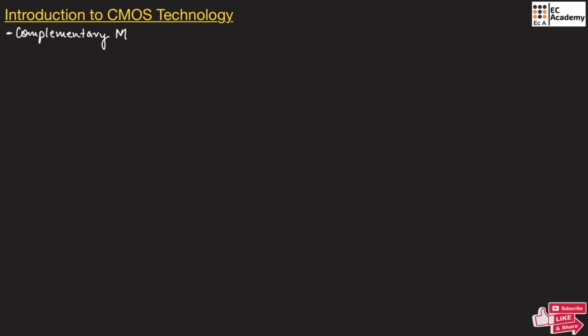CMOS refers to complementary metal oxide semiconductor. It is known as complementary metal oxide because it uses two transistors which are complement to each other. This technology uses two transistors: one transistor is P-type and another transistor is N-type, which will be working together. That is why this technology is known as complementary technology.